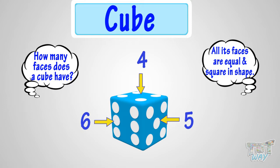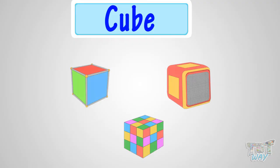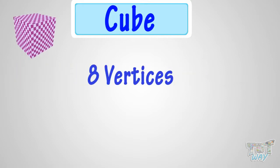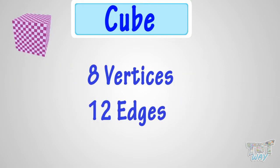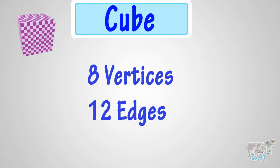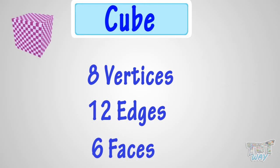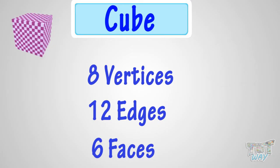So now we know that a cube has 6 faces, which are all equal and square in shape. Can you find more objects like a cube in your house? Try to imagine! These are a few objects that have cube shape. We know that a cube has 8 vertices, 12 edges which are all equal, and 6 faces which are all equal and square in shape.